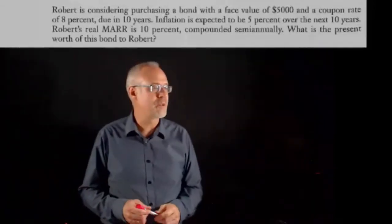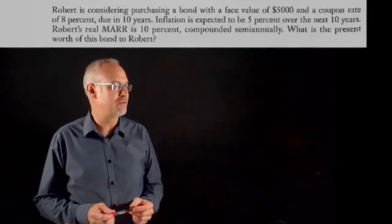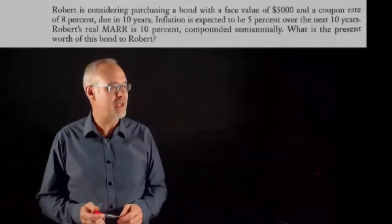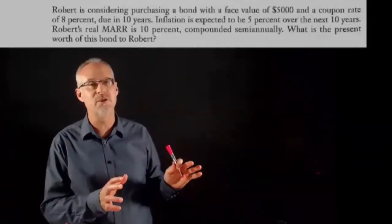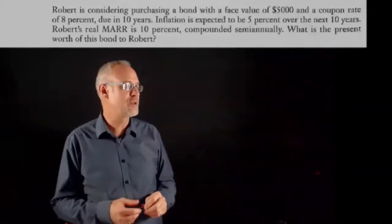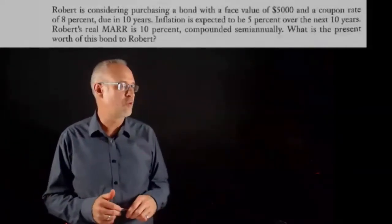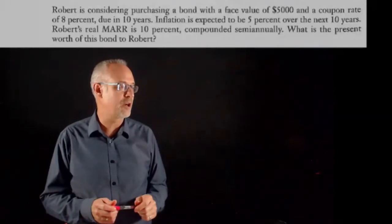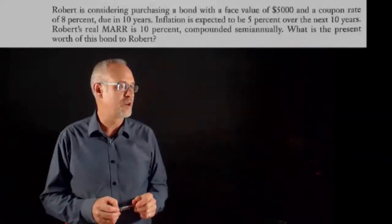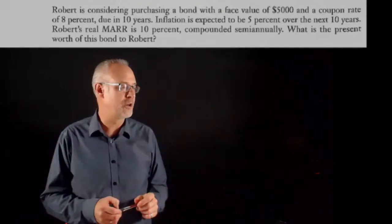Robert's considering purchasing a bond with a face value of $5,000 and a coupon rate of 8% due in 10 years. Inflation is expected to be 5% over the next 10 years. Robert's real MAR is 10% compounded semi-annually. What is the present worth of this bond to Robert?